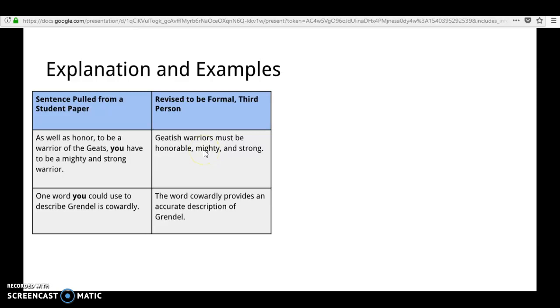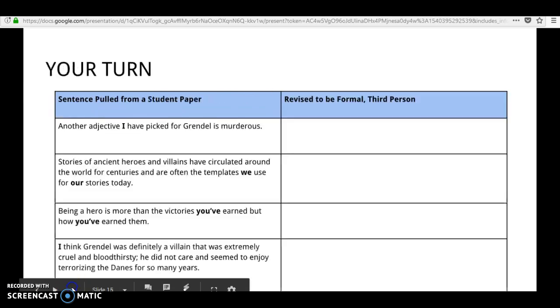You're eliminating that informal pronoun. One word you could use to describe Grendel is cowardly. The word cowardly provides an accurate description of Grendel. Here you are taking out that informal pronoun to provide more formality to your academic essay.